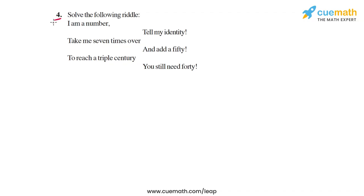Question 4 is an interesting question. It's actually in the form of a riddle, a puzzle. Here's what it says. I am a number. Tell my identity. Take me 7 times over and add a 50. To reach a triple century, you still need 40.